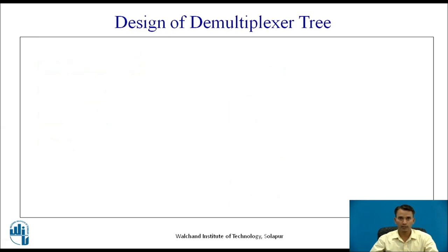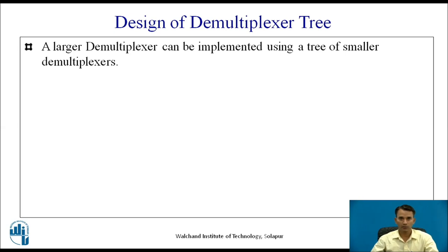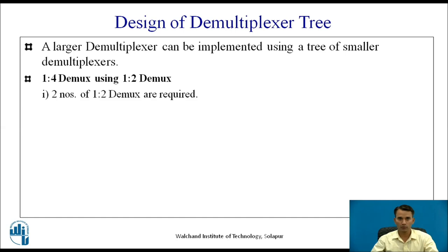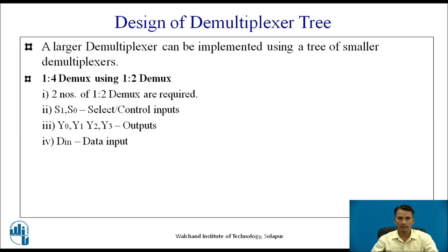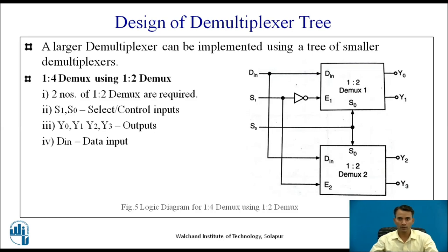Now let us discuss how to design a demultiplexer tree. A larger demultiplexer can be implemented using a tree of smaller demultiplexers. For example, to construct a 1-to-4 demultiplexer using 1-to-2 demultiplexers, we require two 1-to-2 demultiplexers. Each gives two outputs, producing four total outputs, but each has its own input, so there are two inputs which are combined into a single input line denoted as Din.